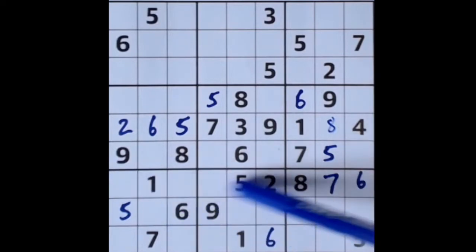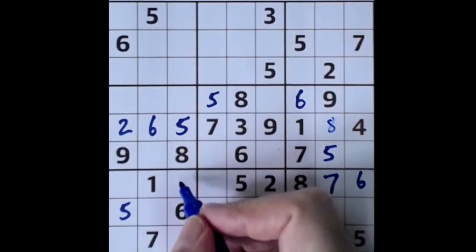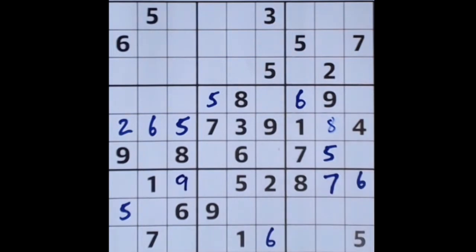We don't yet have a 9 in this row, we have a 9 blocking here and a 9 blocking here, so that's our 9 to place there. And the missing numbers are 3 and 4.